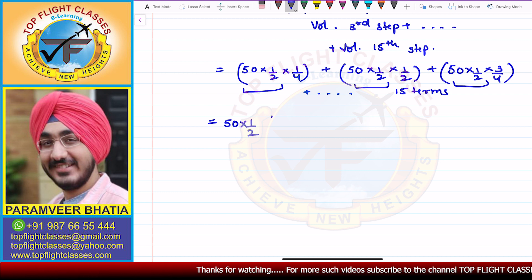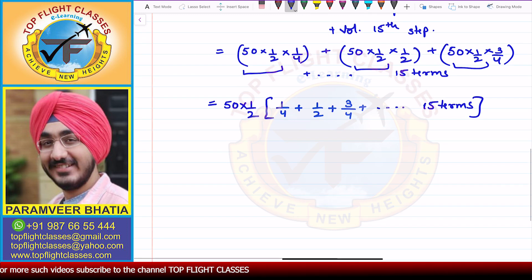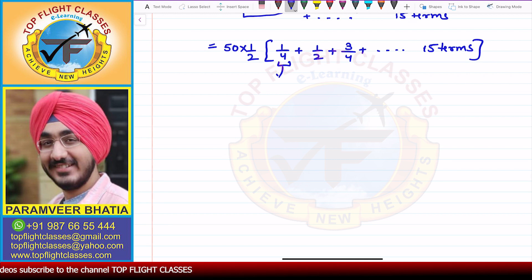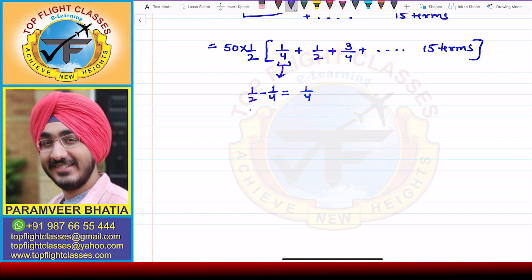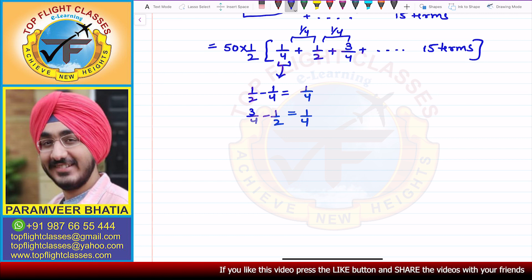Looking at the series inside the bracket: the first term is 1/4, the second term is 1/2. Now 1/2 − 1/4 = 1/4, and 3/4 − 1/2 = 1/4. The difference between consecutive terms is equal, so this is an Arithmetic Progression (AP) with first term a = 1/4, common difference d = 1/4, and n = 15. We need the sum of 15 terms of this AP.